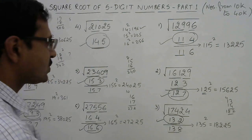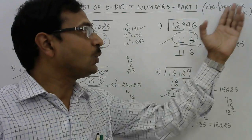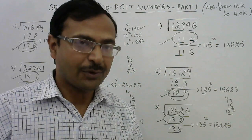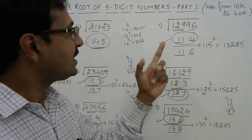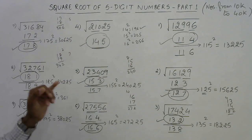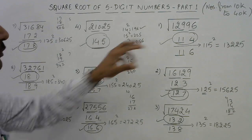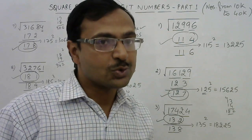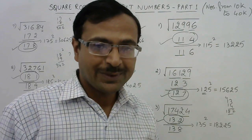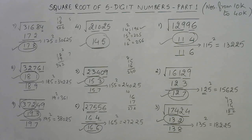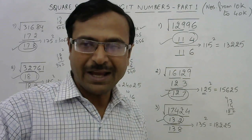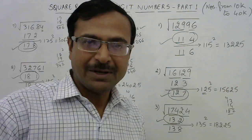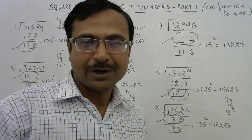This trick works for all five-digit numbers up to 40,000. Beyond 40,000, you need to know squares of numbers from 20 to 29, which I will cover in part two. Practice this method — it will prove very beneficial for competition preparation. If you like this video, share it with friends preparing for competitions and junior students, and do not forget to subscribe to the channel.